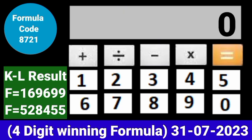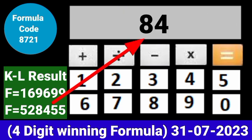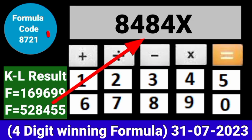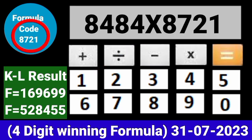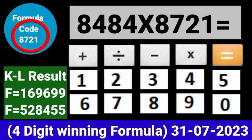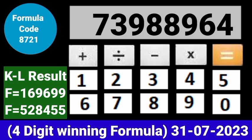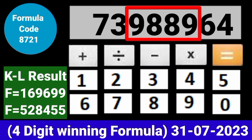Now zero the calculator. Put the next draw number on the calculator and multiply by this same formula code and press equal. After equal, you can check this single 4-digit number becoming into the same place for the next draw of Kerala Lottery 3PM. We will be still trying to see the results of Kerala Lottery 4PM.